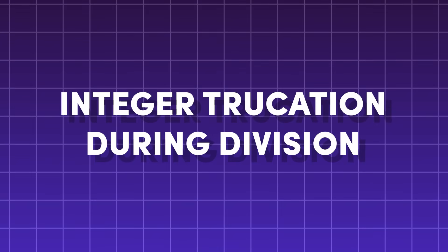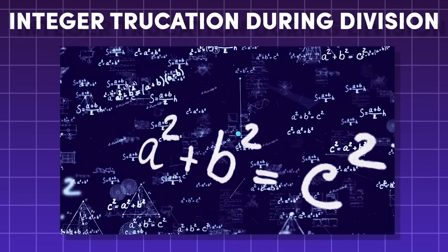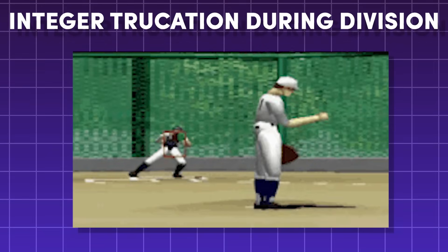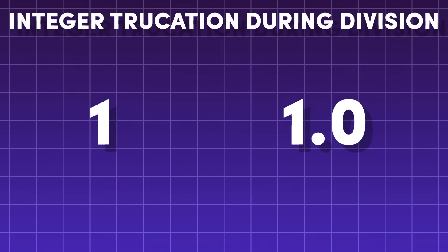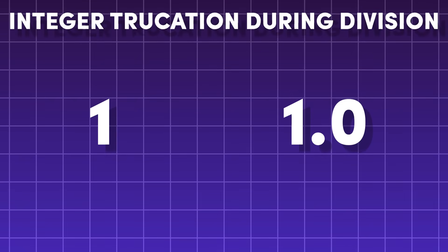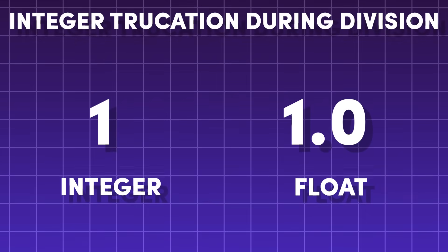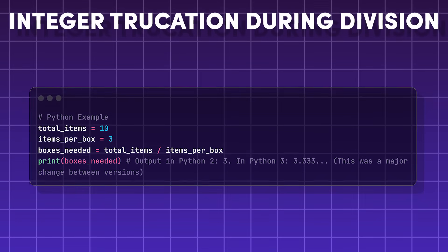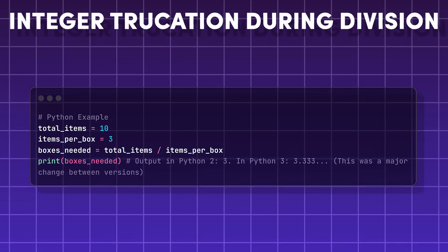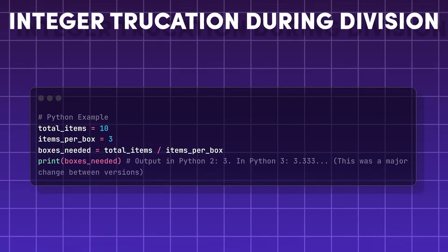Integer truncation during division. Computers are really good at math, but unexpected things can happen if you're not prepared. These may just be numbers to us, but to computers these are very distinct categories. Dividing two integers that don't divide evenly can give you an incorrect answer because of how computers handle integers.